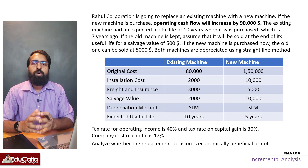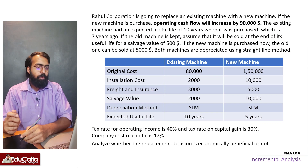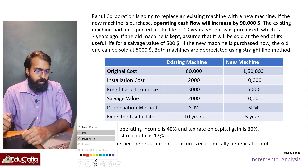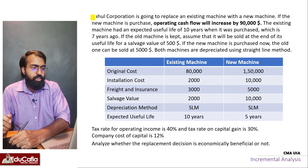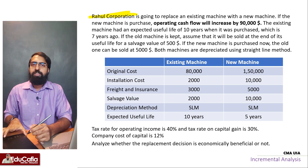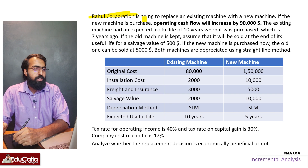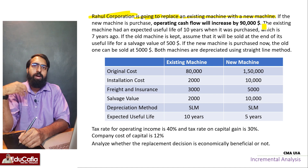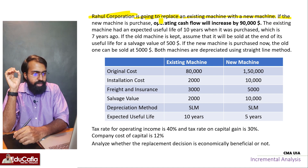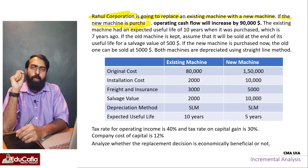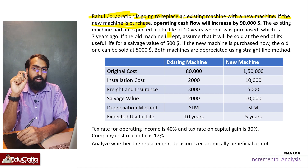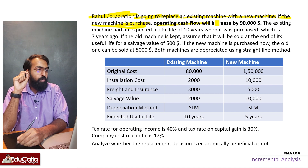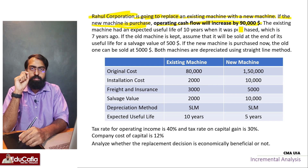Let me ask you a question. Okay. Cash Flow Statement. Rahul Corporation. Rahul Corporation is going to replace an existing machine with a new machine. If the new machine is purchased, operating cash flow will increase by $90,000.